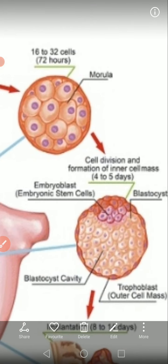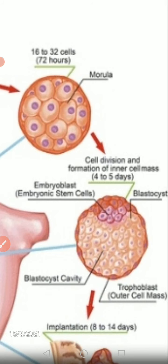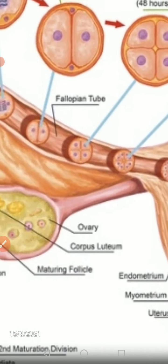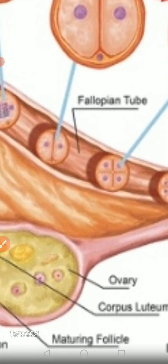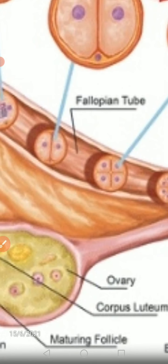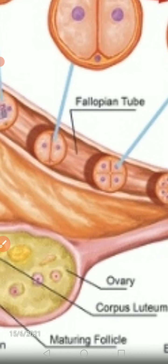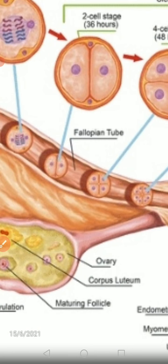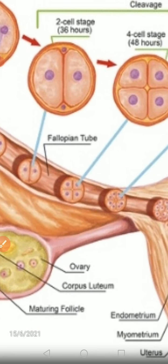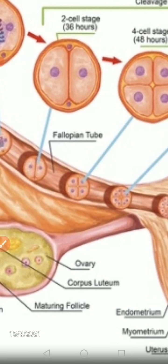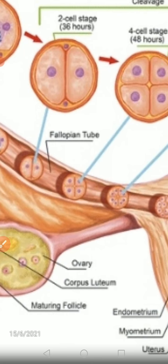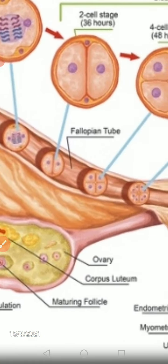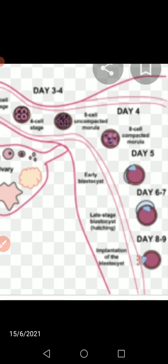After the morula is formed, under the influence of progesterone, the smooth muscles of the fallopian tube relax, and the dividing embryo takes four to five days to move through the fallopian tube into the uterine cavity.